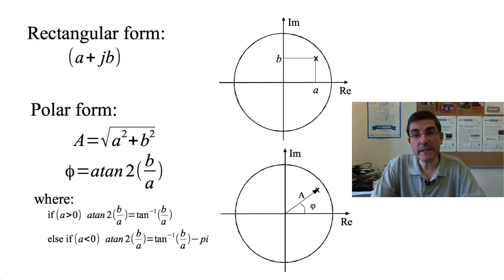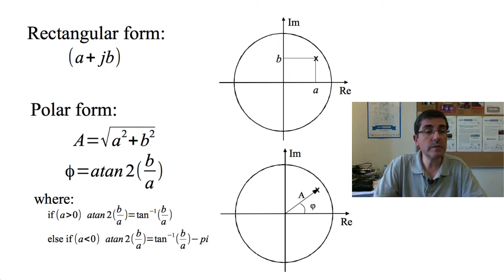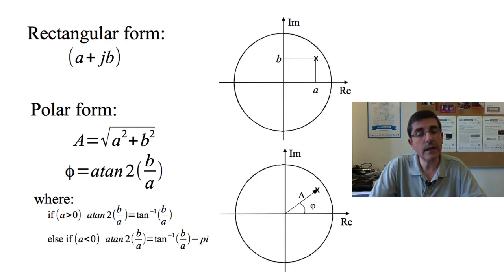A complex number can be expressed in two ways, in what we call rectangular form or in polar form. The rectangular form is the most direct form, in which we explicitly express the a value, the real part, and b, the imaginary value, and therefore the intersection of these two values in the complex plane, with this cross, is the actual complex number.